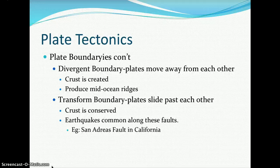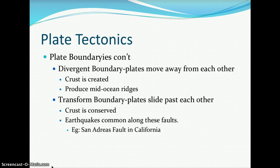The last type of plate boundary is a transform plate boundary, where plates slide past each other. The crust is conserved — neither created nor destroyed. These boundaries are often associated with earthquakes, such as along fault lines like the San Andreas Fault in California.